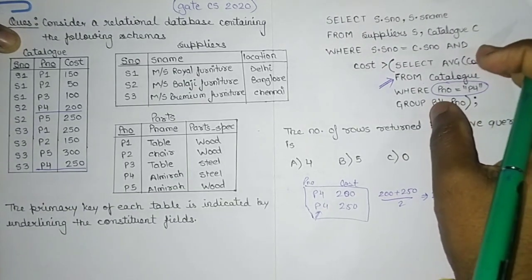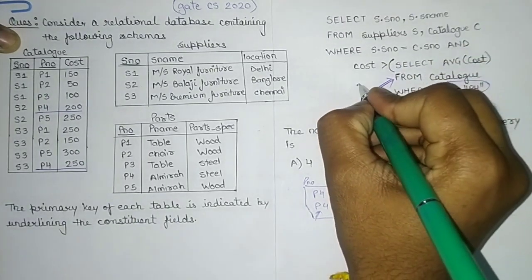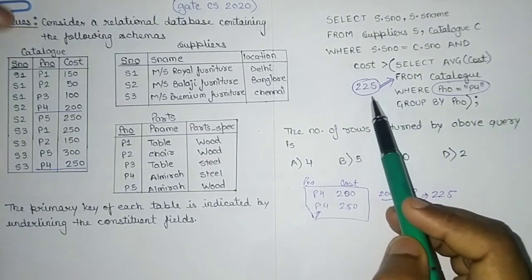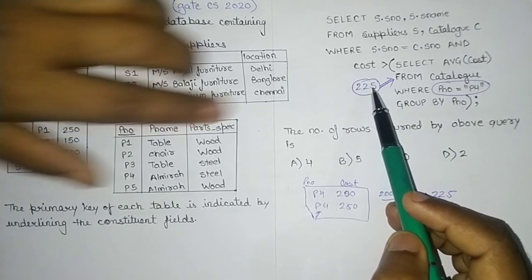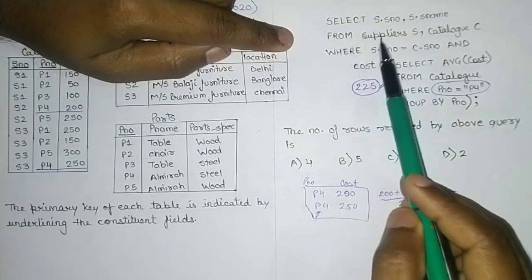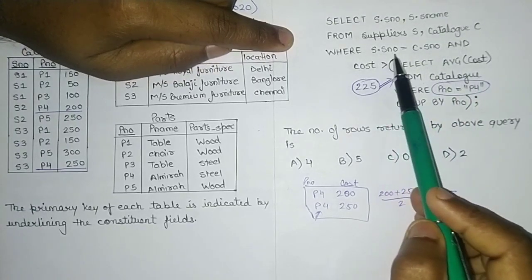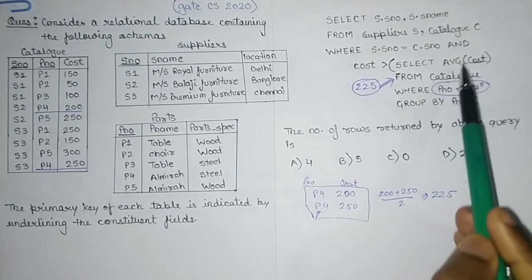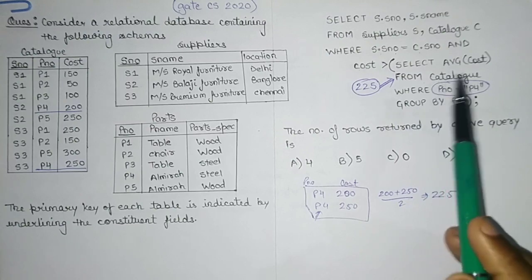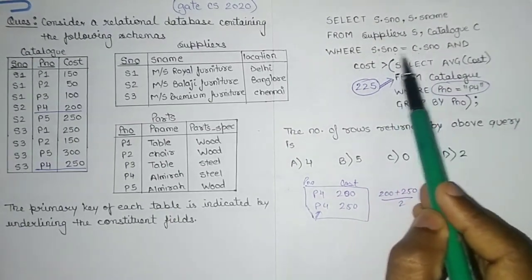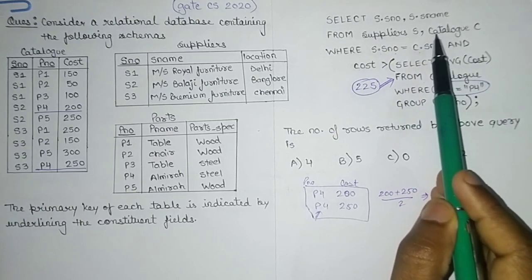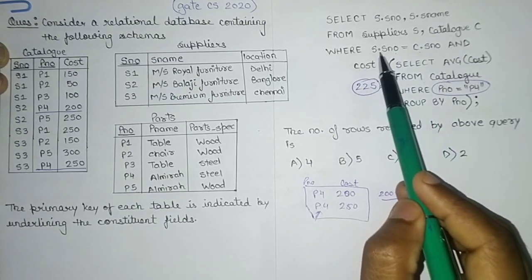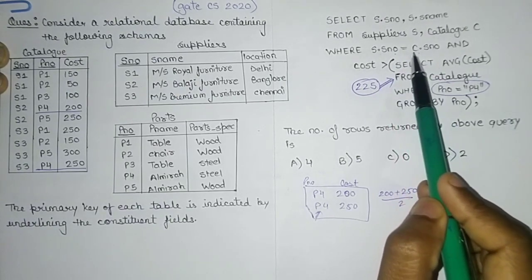That means the inner query returns 225, so the condition in the outer query becomes: cost greater than 225. Now the actual query is: select S number and S name from supplier as S, catalog as C, where supplier's serial number equals catalog serial number and cost is greater than 225. This has been resolved to a specific value. Now we perform the join operation using this join condition.